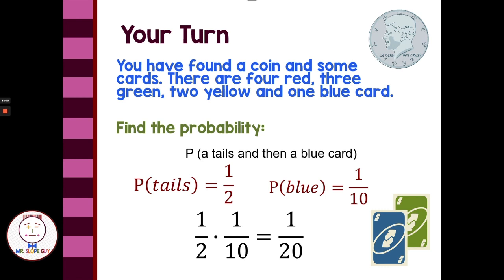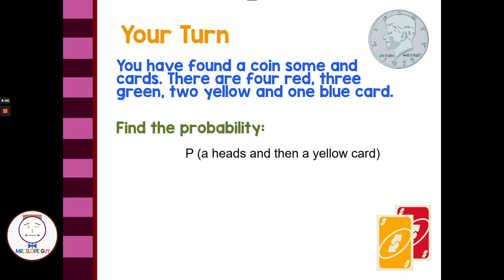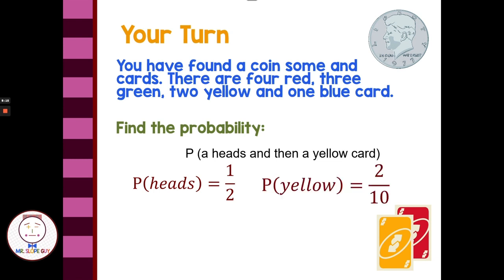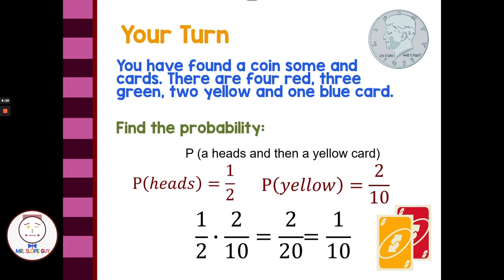You guys try another one — pause the video here and try that one. Probability of heads: that's one-half, one success out of two possibilities. The yellow card — there are two yellow cards out of our ten cards, so two-tenths. One-half times two-tenths gives us two-twentieths, or one-tenth. So one out of every ten times I would expect to flip the coin, get a head, draw a card at random, and get a yellow card.